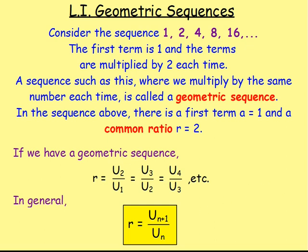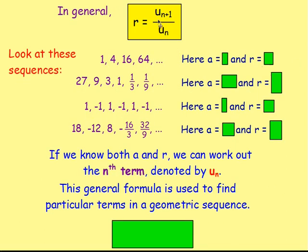Really, in general then, you would have r equals u(n+1) over un, and that is your common ratio. So let's use that in order to find out both the values of a and r. Look at the following sequences. We've got one, four, sixteen, sixty-four.